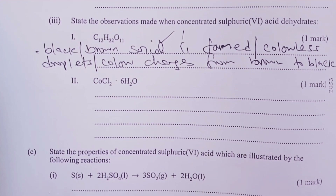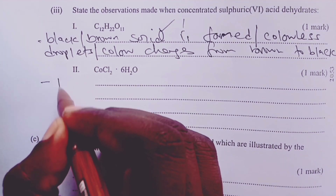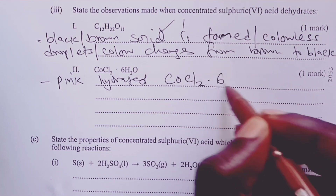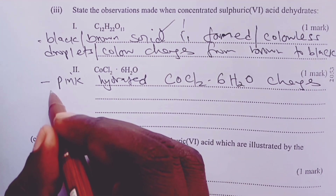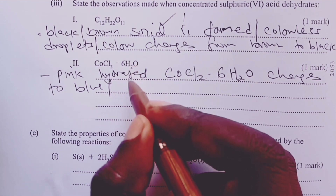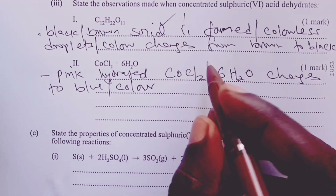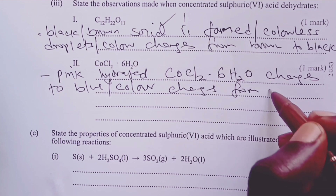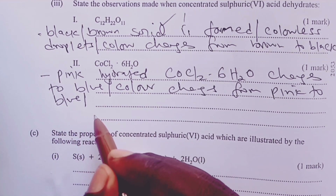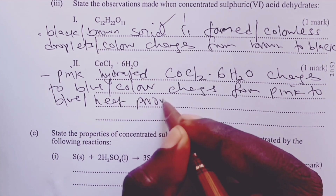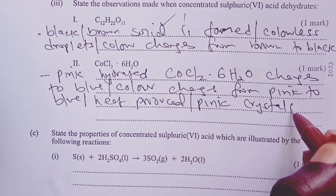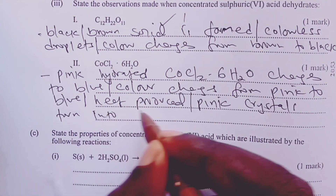For hydrated cobalt chloride, the observation is that pink hydrated cobalt chloride changes to blue. Those colors must appear in your answer to score the mark. A student could write that color changes from pink to blue. Heat can also be produced as an observation, and pink crystals turning into blue powder was also accepted.